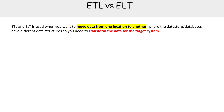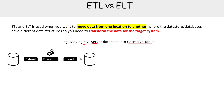Let's take a look at ETL versus ELT. ETL is used when you want to move data from one location to another where the data store or database has a different data structure, so you need to transform the data for the target system. A common use case would be MS SQL to Cosmos DB — one is relational, the other is NoSQL — they don't have the same data structures, so you'd have to do some kind of transformation.